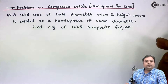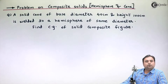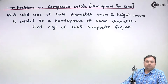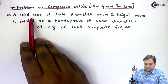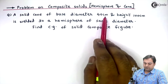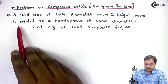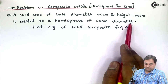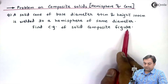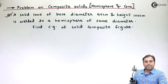Hello friends, in this video I will be taking a problem on composite solid which is made up of hemisphere and cone. So let us read the question: a solid cone of base diameter 40 centimeter and height 100 centimeter is welded to a hemisphere of same diameter. Find the CG of the solid composite figure.